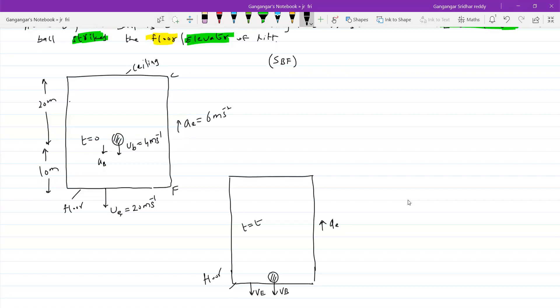The position of ball with respect to floor finally minus position of ball with respect to floor initially equals UBF T plus ABF T squared. Finally they'll meet. So the final separation will be 0. Initial position, let me take this, it's equal to 0. I'll expand the formula. Then we'll substitute all.